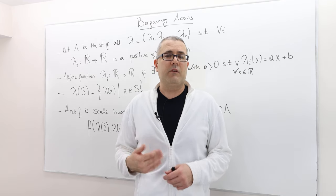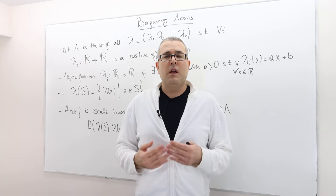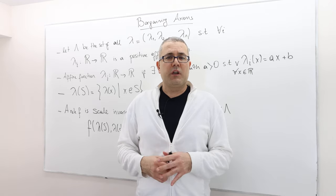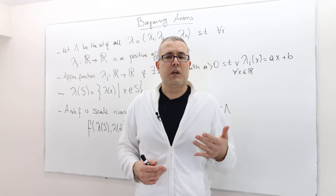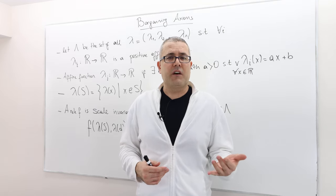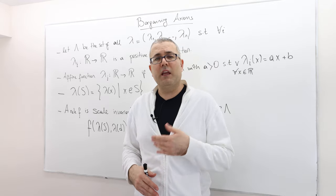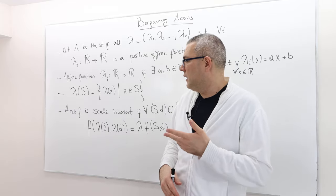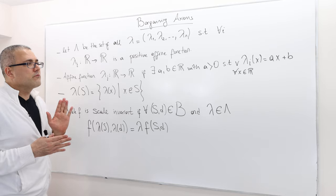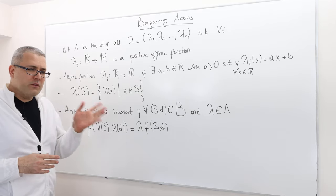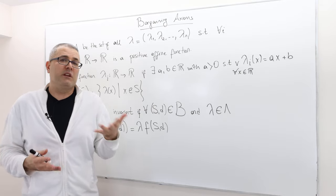This episode, I'm going to talk about a new axiom called scale invariance. We would like to measure goodness of a bargaining rule, and we measure those depending on whether they satisfy some nice properties. Those properties are called axioms. So one of the axioms we're going to talk about is scale invariance. Before giving you the formal description, maybe it's better to describe what it really means.